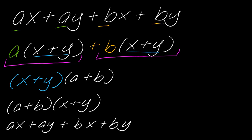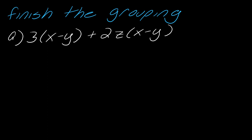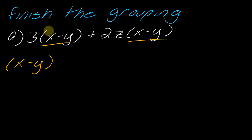To get you used to this, I want to focus on just this step — recognizing when parentheses match — and this will help us a lot with grouping. In this example, the thing you're really checking for is that what's inside the parentheses is the same. This is x minus y, and this is x minus y. So that allows me to factor out x minus y, and everything left over — this 3 plus 2z — goes in the other set of parentheses. This is where I want to start just to get us warmed up.